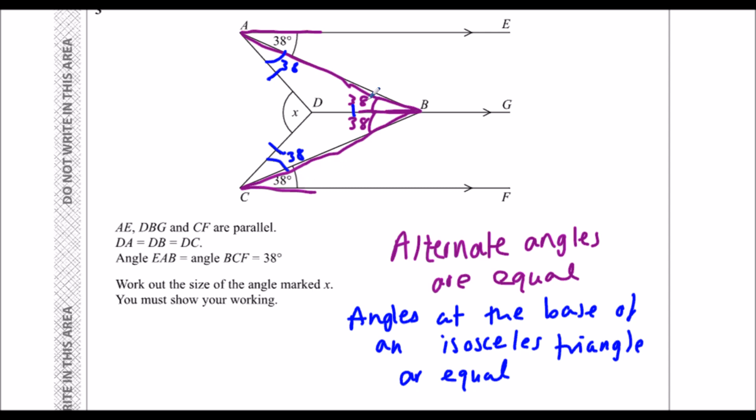So we've got 38, 38, 38, 38 and 38. So we also know angles in a triangle add up to 180 degrees. So we can work out these two, this one here, and this one here, because angles in a triangle equals 180 degrees.